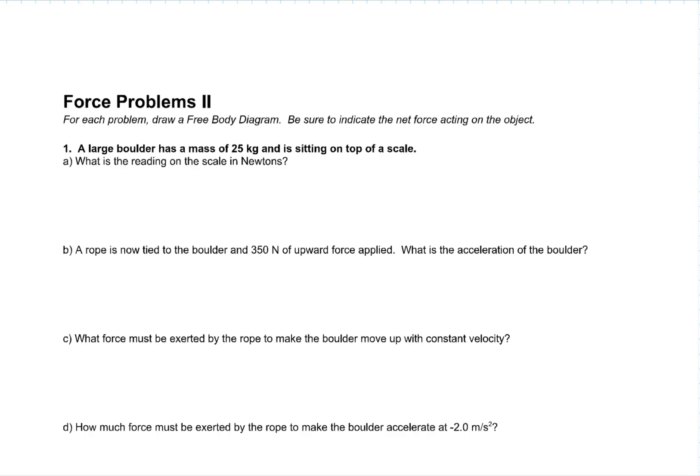Number one: I have a boulder that has a mass of 25 kilograms and is sitting on top of a scale. If we draw it, because it has mass, I know that there's going to be weight — the force of gravity — acting down on it, equal to mass times the acceleration due to gravity. And if it's sitting on a scale, the normal force from the scale is pointing upwards. That's what the scale reading is going to be.